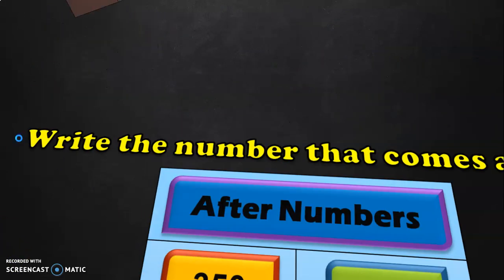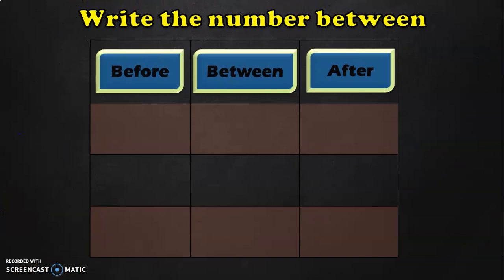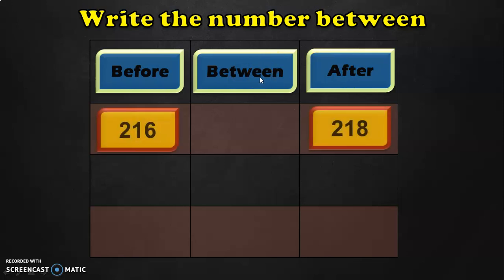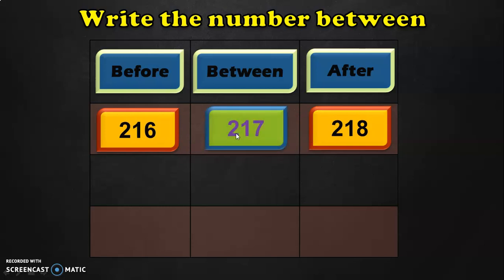Let us do the last number activity: between numbers. You will have to write the number that comes between two numbers. Always remember that to identify the between number, it will be one more than the before number and one less than the after number. Here I have given you two three-digit numbers: 216 and 218. The between number is one more than 216, which is 217, and 217 is also one less than the after number 218.